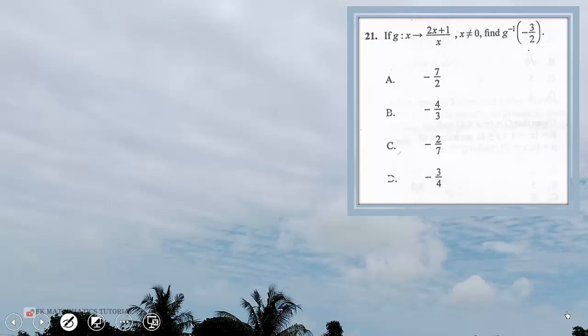It's time for us to move on with the WASSCE 2023 Further Mathematics Paper 1. Questions 21 through 30 will be solved in this video. For question 21, if g is such that x maps to 2x plus 1 all over x, for x not equal to 0, find g inverse of negative 3 over 2.